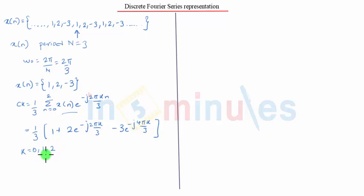We substitute these values. So c₀ comes out to be 1 by 3 [1 plus 2 minus 3], that is 0. For k equals 1, that is c₁ equals 1 by 3 [1 plus 2e raised to minus j 2π by 3 minus 3e raised to minus j 4π by 3].